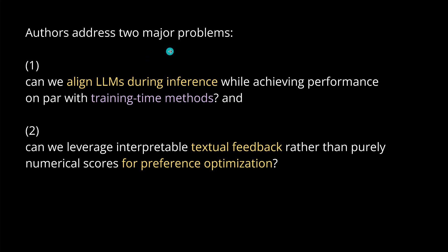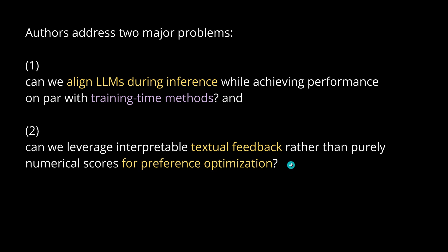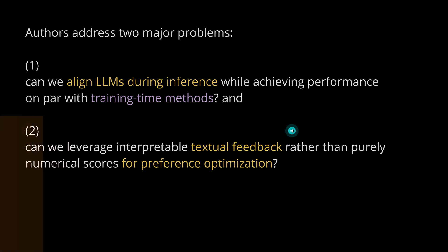The authors said we have to address two major problems. First: can we align our LLMs during inference while achieving performance on par with training time methodology? Second: can we leverage interpretable textual feedback rather than artificial numerical scores that we have to normalize for preference optimization? This is really challenging, because we go to the limits of the LLM — using its reasoning and analytical abilities to provide a reinforcement learning methodology.